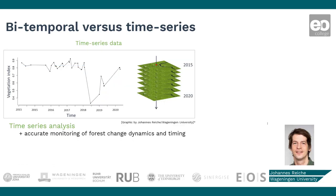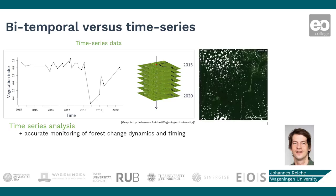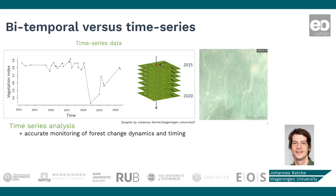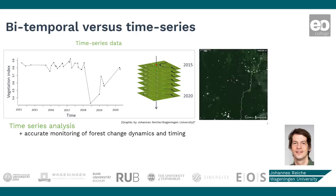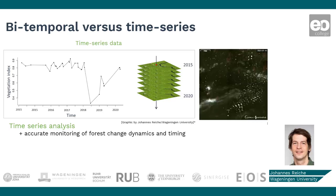You may wonder why there are still only about 35 observations available for the period of five years, although Landsat satellites provide images every 16 days. This is because of persistent cloud cover, which leads to data gaps and a reduced number of observations, and that represents a major limitation of optical remote sensing in the tropics. Radar data can help to overcome that.